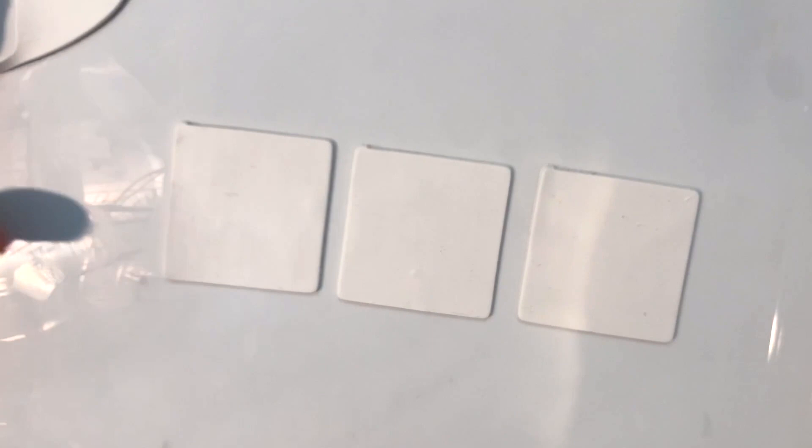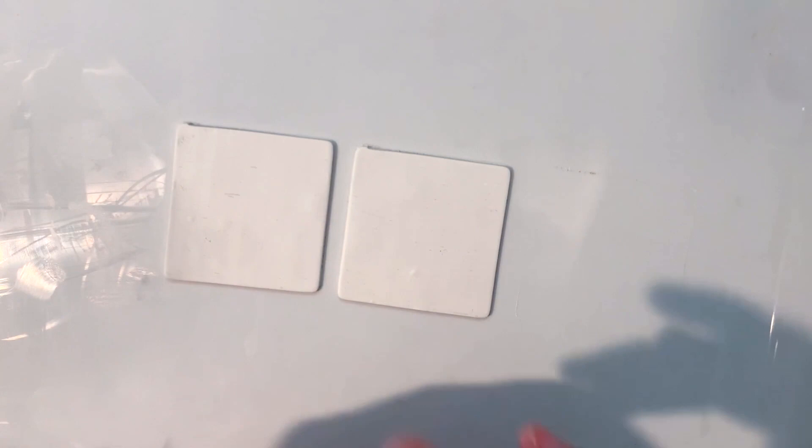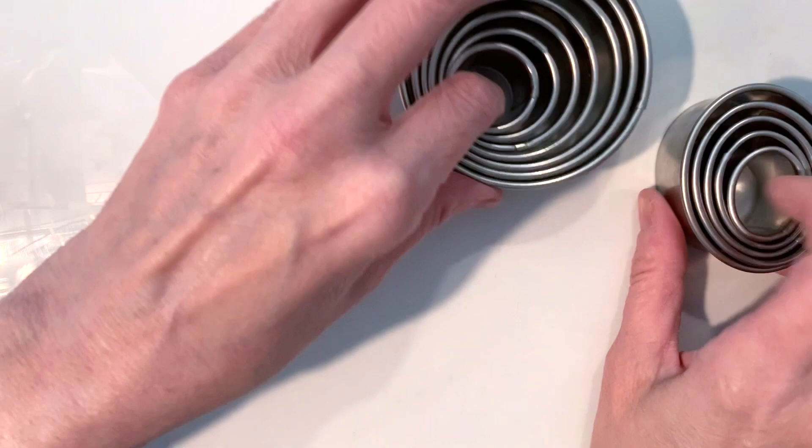Here I have flattened out some of my white polymer clay on a number two or three setting of your Atlas pasta machine, and I will now take one of these three pieces I have created here with my square cutter and make my first layer by using my Ateco circle and oval cutters by randomly cutting out pieces out of this square piece of clay.